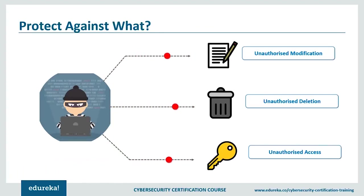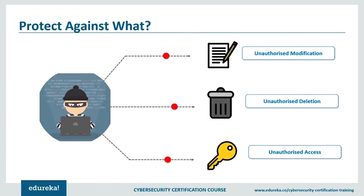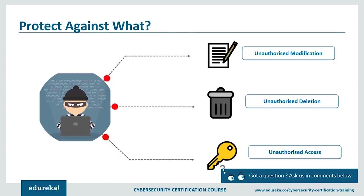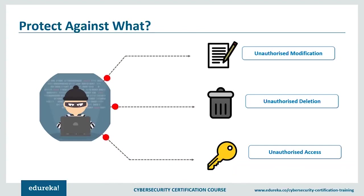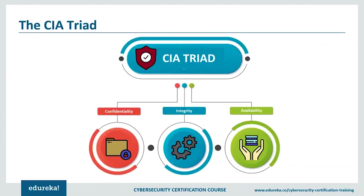When talking about cyber security, there are three main activities we try to protect against: unauthorized modification, unauthorized deletion, and unauthorized access. These are synonymous with the CIA triad — confidentiality, integrity, and availability. The CIA triad is commonly referred to as the three pillars of security, and most security policies of organizations, big and small, are based on these three principles.